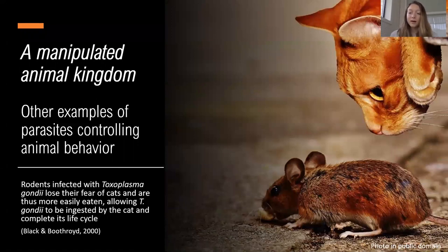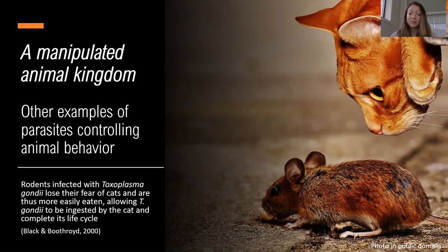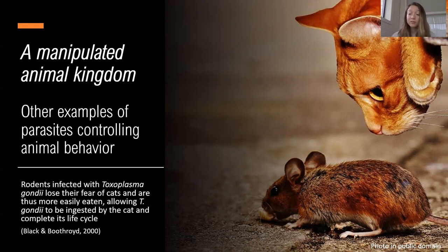Another fascinating parasite that could be much closer to you than you would like is the protozoan Toxoplasma gondii. Some of you may have already heard of it because T. gondii is relatively common in domestic cats and can actually infect humans. But behavioral manipulation by this protozoan is primarily targeted at rodents. When they are infected with T. gondii, they lose their fear of cats and are thus more easily eaten, which allows T. gondii to be ingested by a cat and complete its life cycle in the cat's intestine.